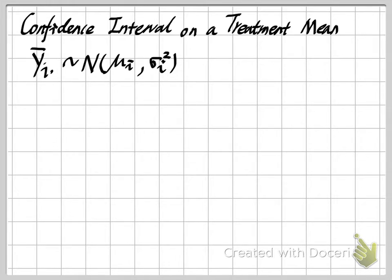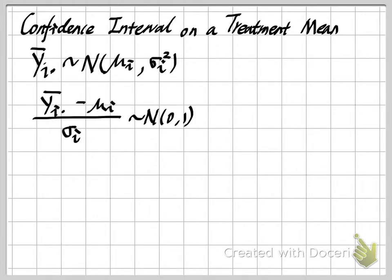If we want to standardize this, the numerator follows a standard normal distribution. But the question is we don't know the value of our variance sigma i squared. What we should do is use an estimator to replace sigma i. We will use the sample variance — the mean square error (MSE) — to replace it, which changes this statistic to a t-distribution.